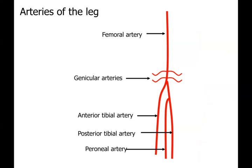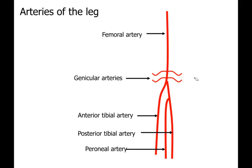This is a summary of the vessels in the leg. One important artery not yet mentioned is the peroneal artery - the artery of the lateral compartment. It is a branch of the posterior tibial artery. Even though it supplies the lateral compartment, it remains in the posterior compartment and sends branches into the lateral compartment. So it is wrong to say the peroneal artery lies in the lateral compartment - it supplies it but lies in the posterior compartment.